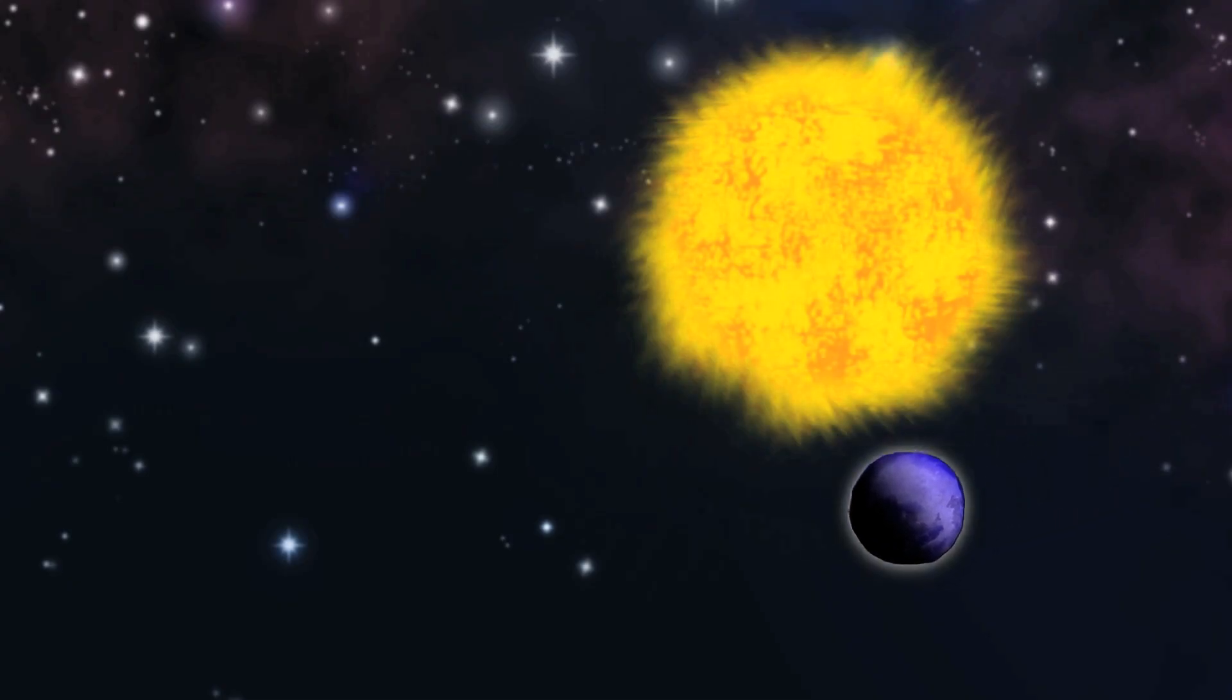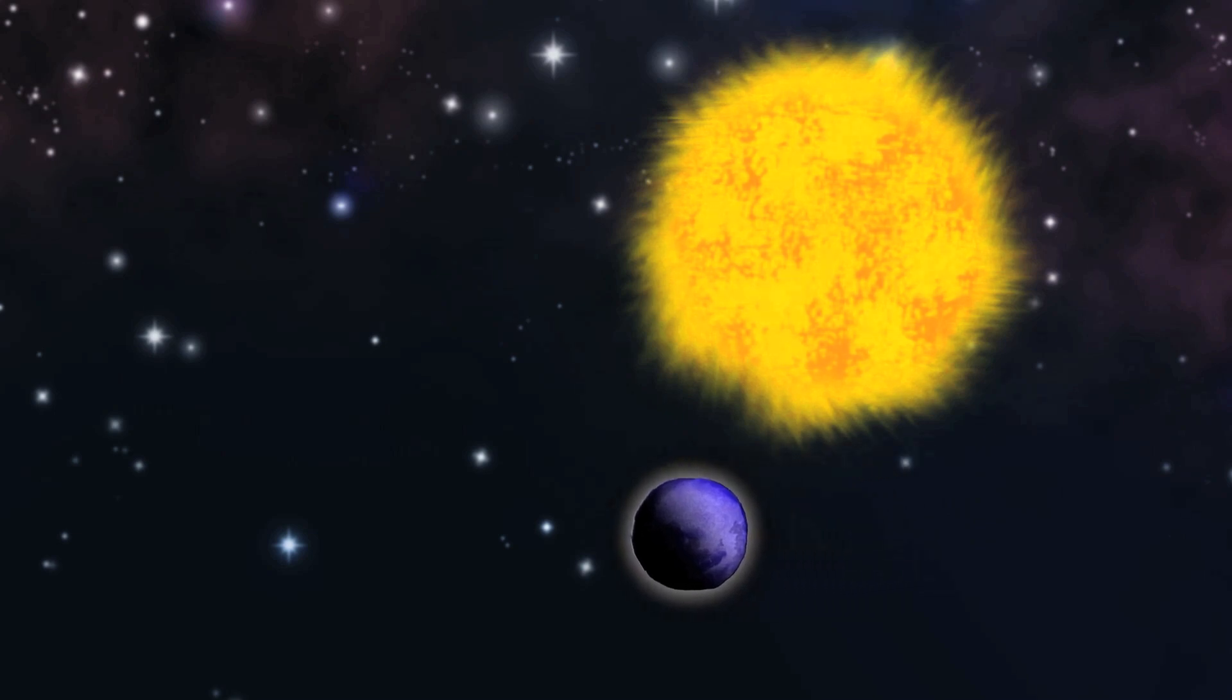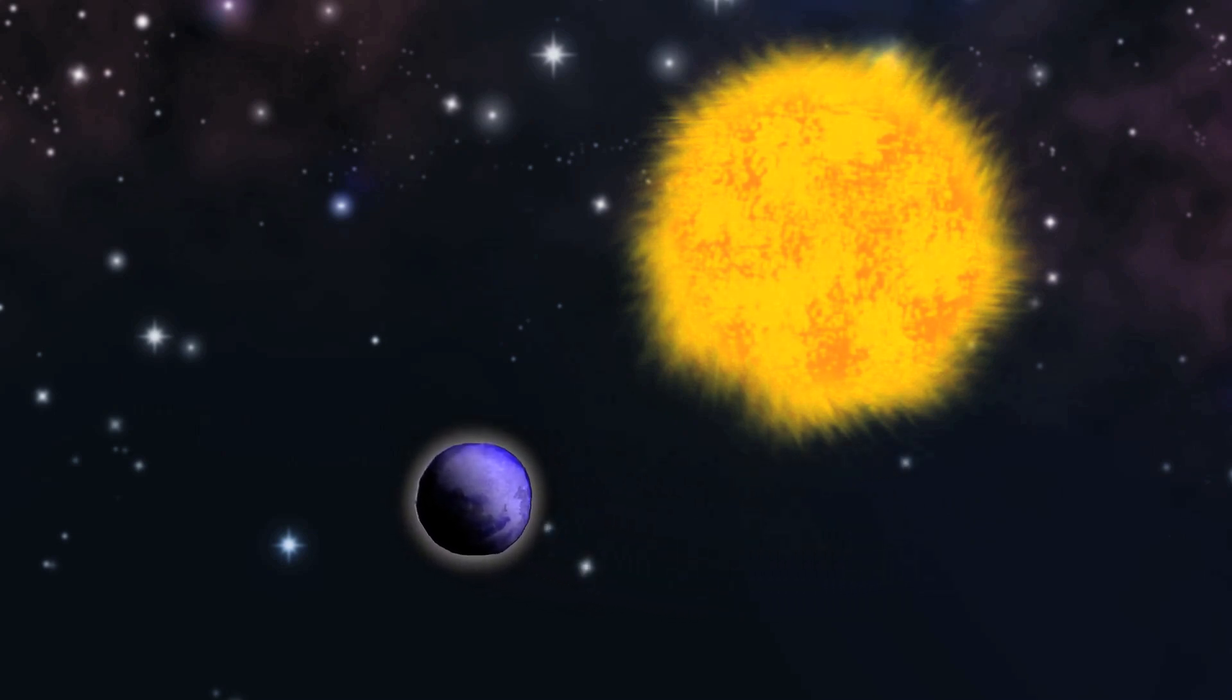It would be very interesting to know something about the atmospheres of exoplanets. And the only way we have right now is to rely on eclipses. When the planet goes in front of the star and blocks a little bit of its light, some of that starlight goes through the outer, thinner part of the planet's atmosphere on its way to us.